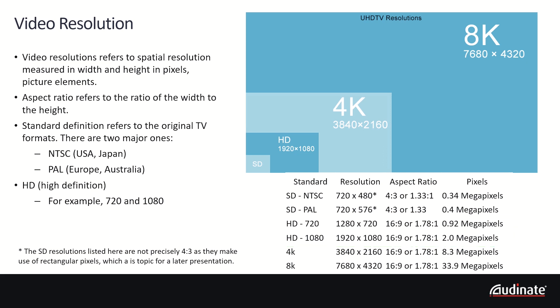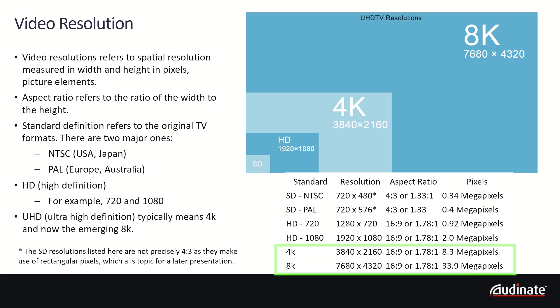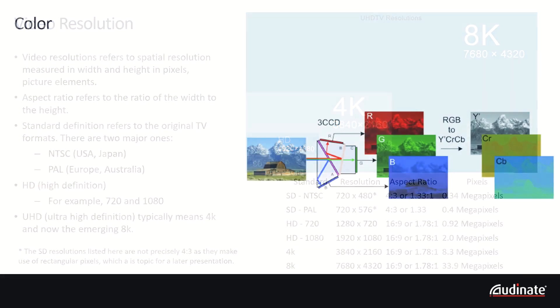After HD, ultra high definition has emerged. UHD has typically meant 4K, or 3840 scan lines, and recently 8K has emerged with 7680 scan lines.